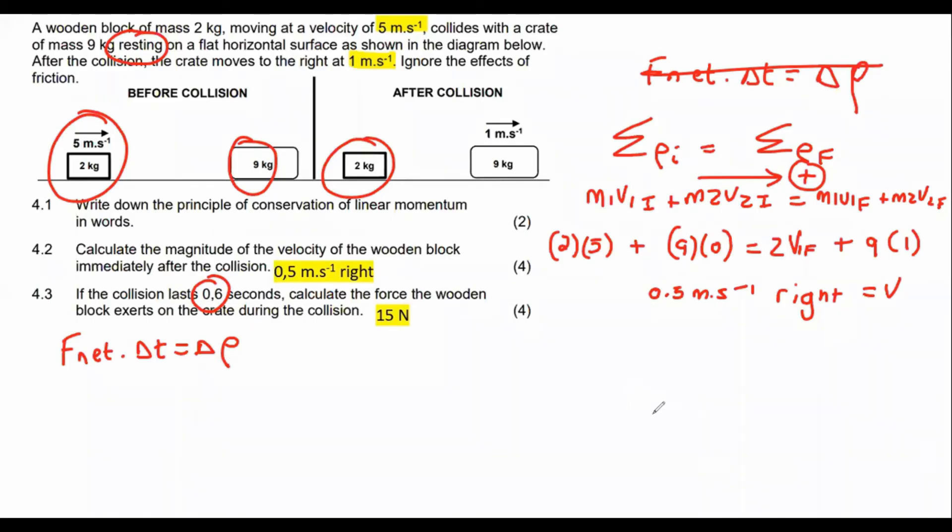So it says, if the collision lasts, now there's something important I'm about to mention. If the collision lasts for 0.6 seconds, calculate. Now listen carefully. Calculate the force that the wooden block exerts on the crate. So who are we actually looking at in this question?